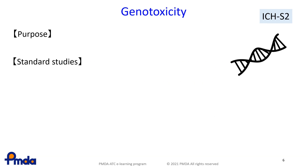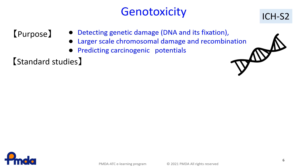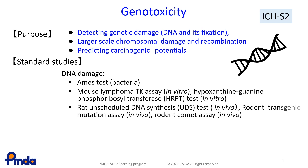Genotoxicity studies are described in the ICH-S2 guideline. They aim to evaluate the effects of test substances on genetic damage, chromosomal damage, and recombination. In some cases, the carcinogenic potential of test substances can be predicted based on the results of genotoxicity studies. To investigate effects on genes, Ames tests, mouse lymphoma TK assays, and HPRT assays are conducted in an in vitro test system; and rat UDS tests, rat transgenic mutation assays, and rat comet assays are used in an in vivo test system.